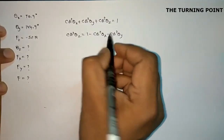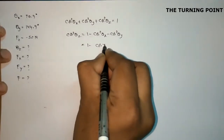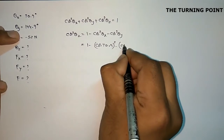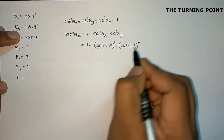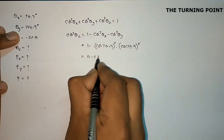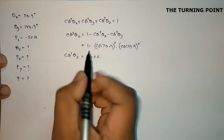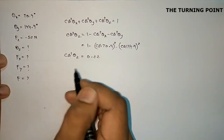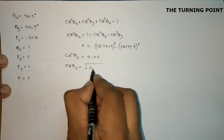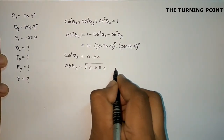We know the values of theta x and theta y, so substituting: 1 minus cos²(70.9°) minus cos²(144.9°). Calculating this gives 0.22. So cos² theta z = 0.22, and therefore cos theta z = square root of 0.22, which gives 0.47.